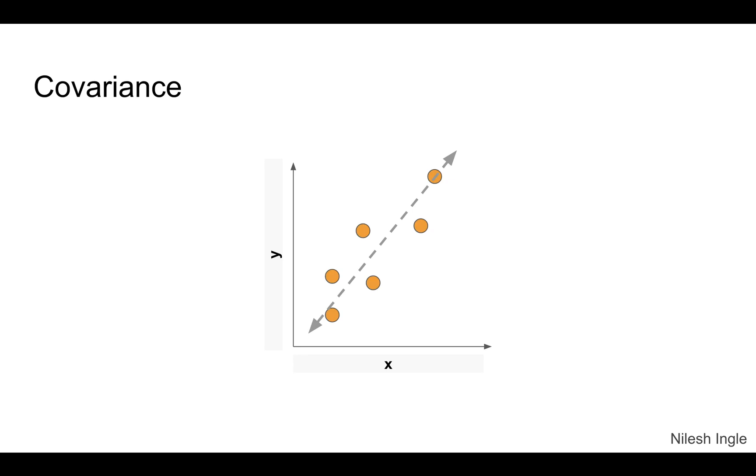As you probably already know, what we are trying to do in covariance or variance in general is we are trying to find the spread of data as shown here by the orange dots.